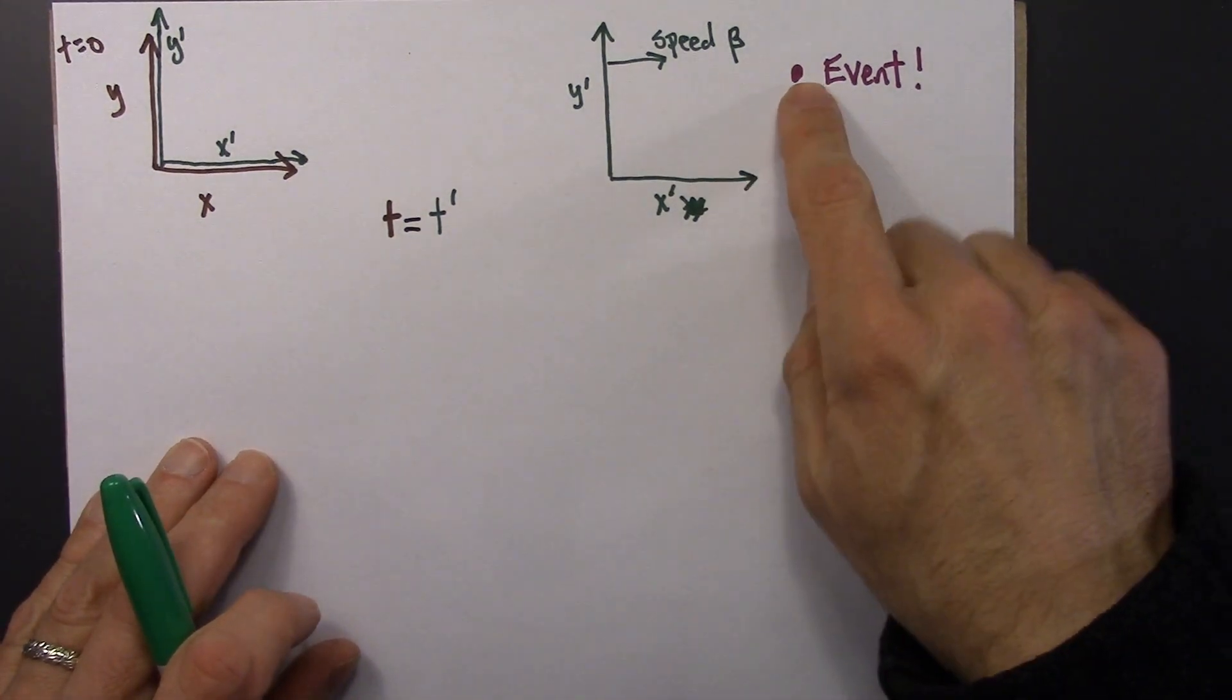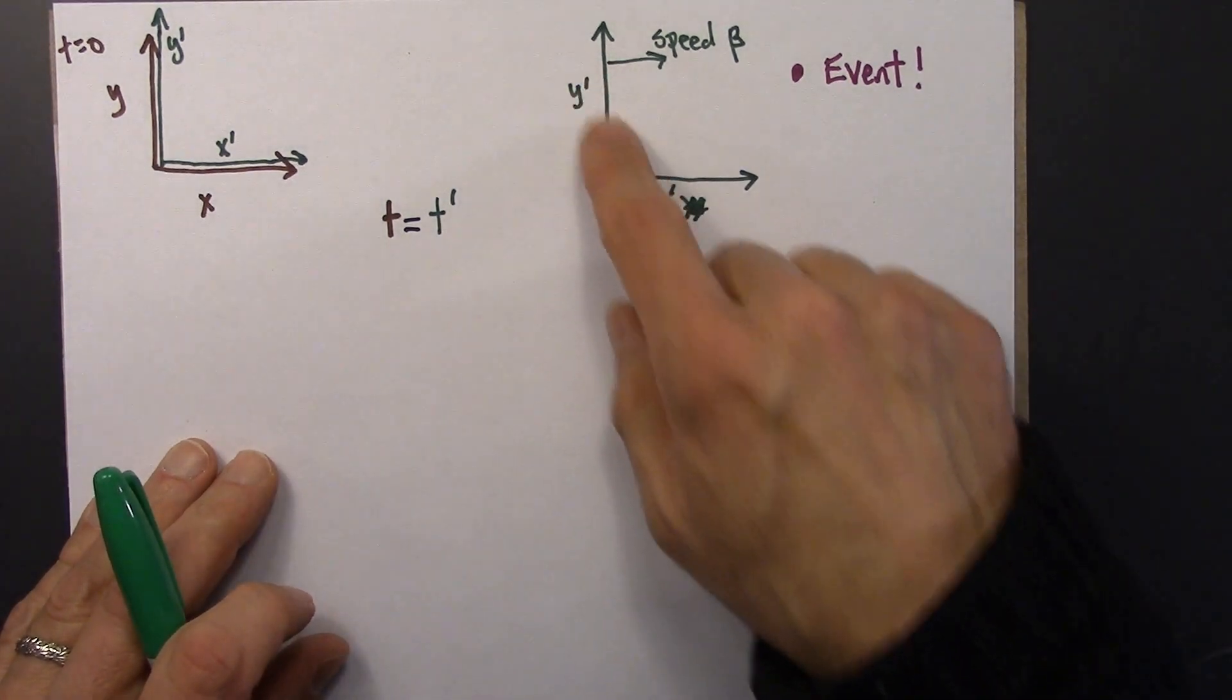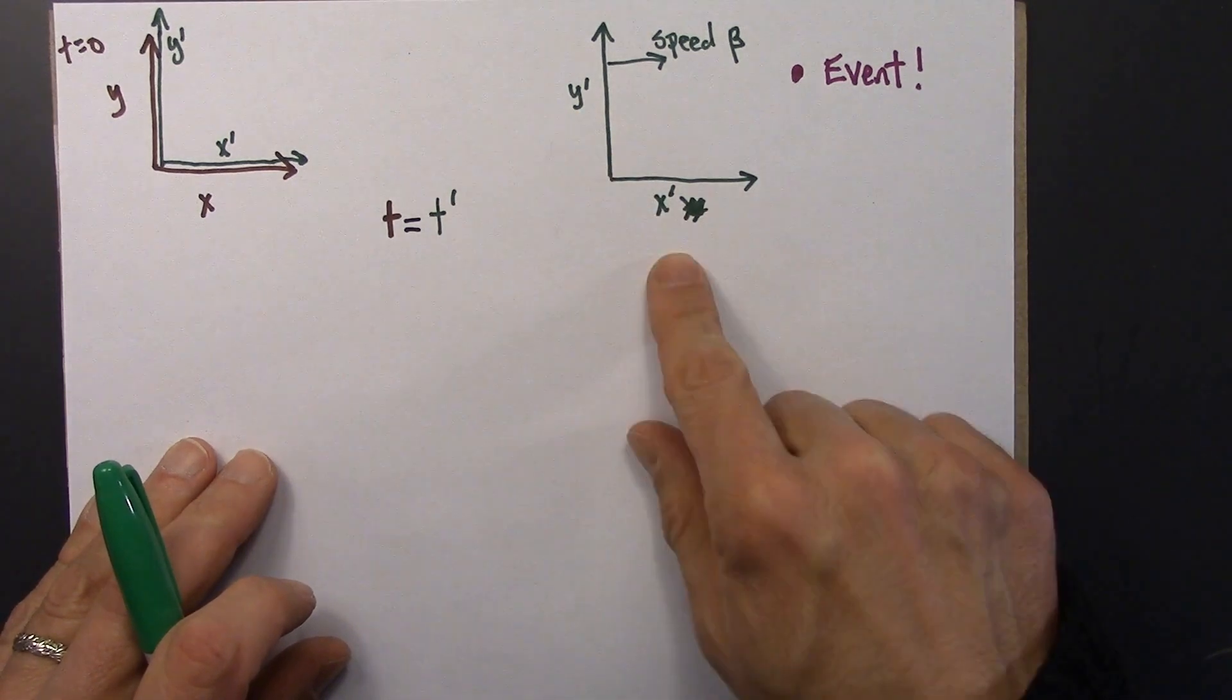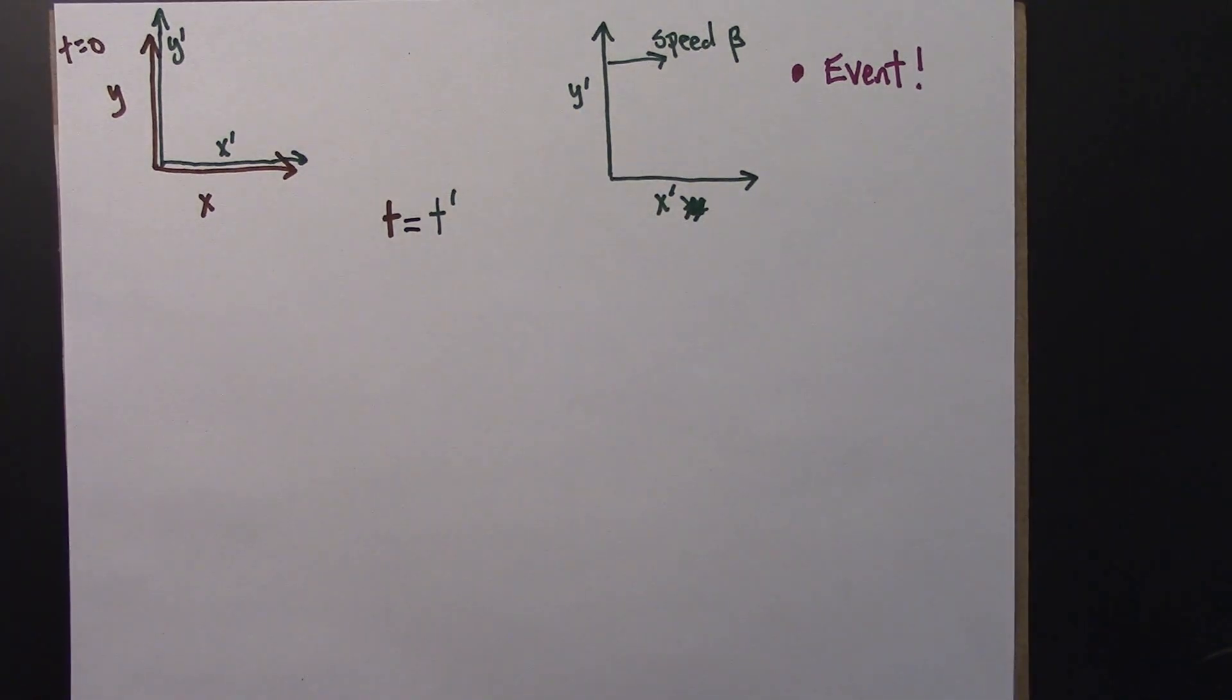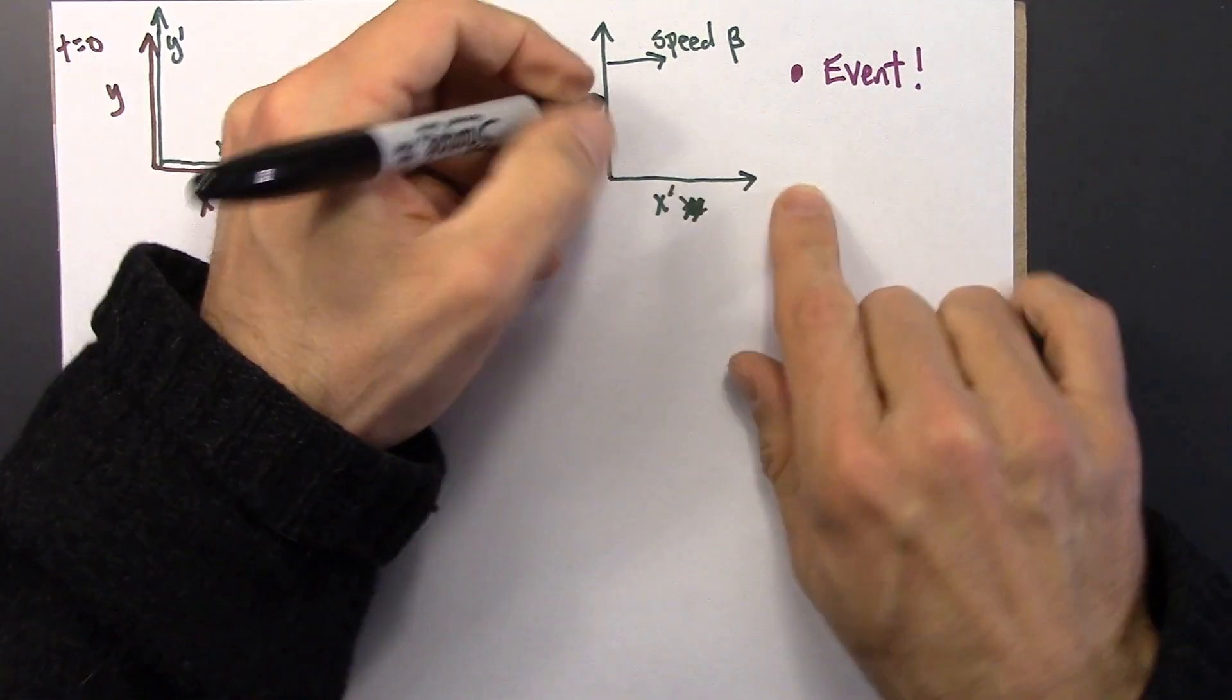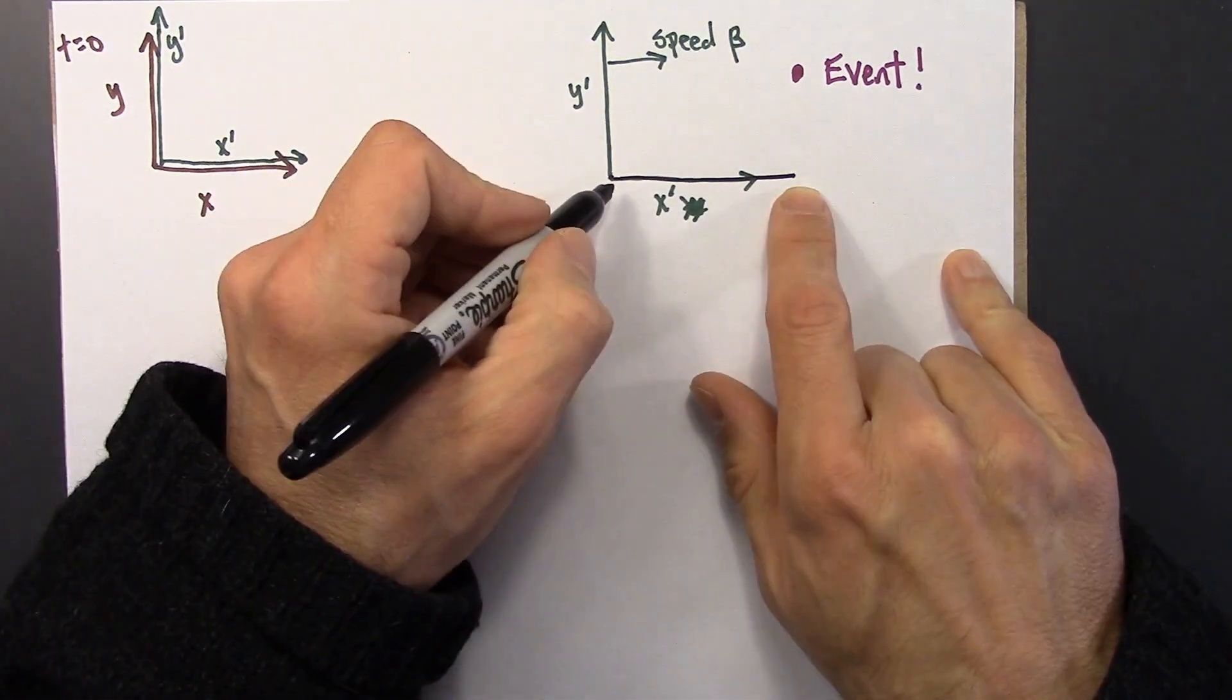Okay, but what about the space coordinates? What about the location of this event? What would the location of that be in terms of x prime and y prime? Well, according to this, the x prime for that event is just going to be this length, which I just drew in black.